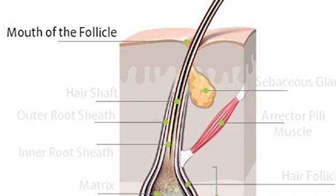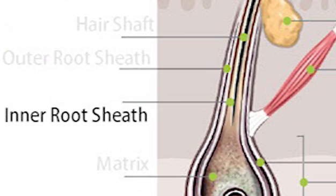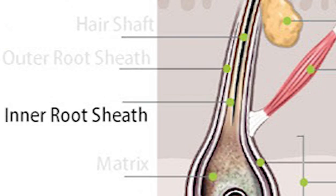The mouth of the follicle, or the opening of the skin where the hair comes out, is also known as the pores. You have the inner root sheath, which is the area located between the outer root sheath and the hair follicle. The outer root sheath is what encases the inner root sheath and the hair shaft, like a bit of a jacket.